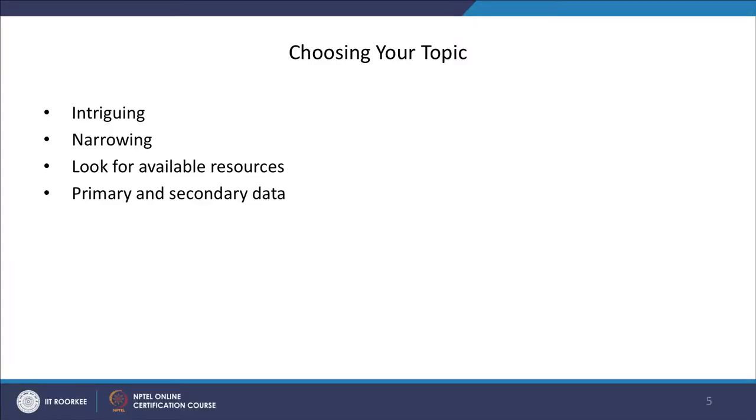Once you narrow down your topic, you go for specific available resources. Specific resources can be your primary data and secondary data. Primary data may be in the form of books; secondary data may be in the form of journal articles, conference proceedings, electronic data, and even electronic versions of PhD theses. All these are helpful when you want to extend your research topic and contribute something new and innovative to the world of knowledge.